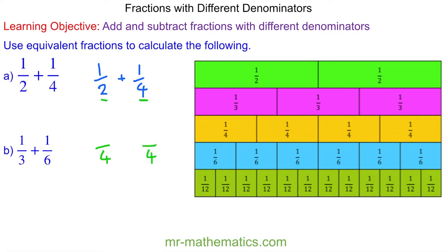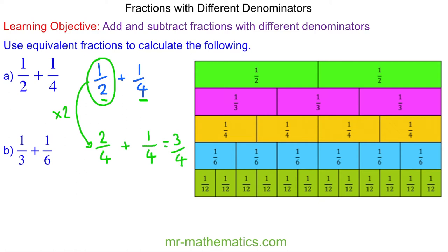To do this, we need to multiply this fraction by two, because two times two makes four. So one times two is two, meaning this fraction is equivalent to two quarters.